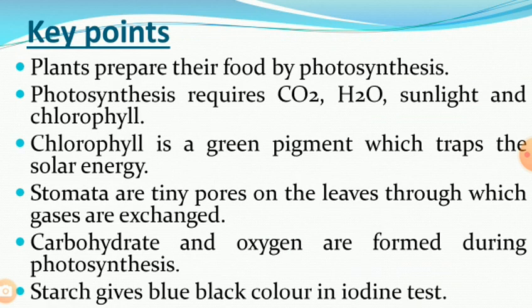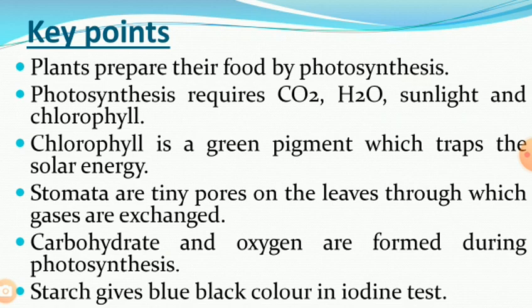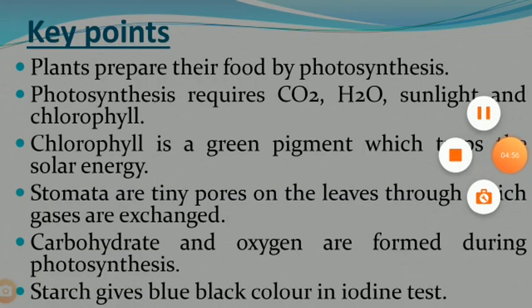Let's summarize the topic. Plants prepare their food by photosynthesis. Photosynthesis requires carbon dioxide, water, sunlight, and chlorophyll. Chlorophyll is a green pigment which traps the solar energy. Stomata are tiny pores on the leaves through which gases are exchanged. Carbohydrates and oxygen are formed during photosynthesis. Starch gives a blue-black color in the iodine test. In the next class, we will discuss heterotrophic mode of nutrition.